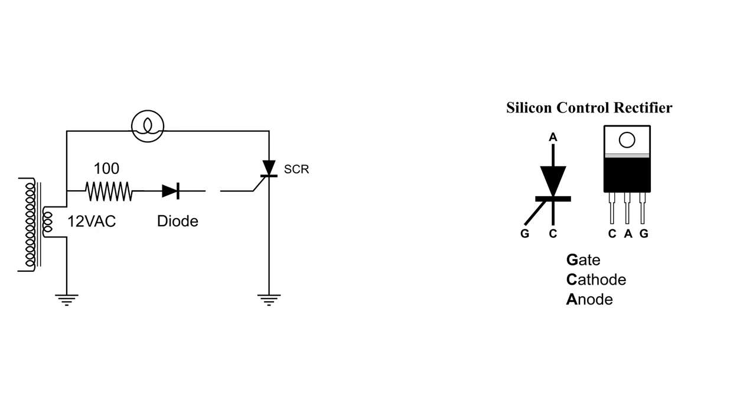And the SCR is connected to ground and one side of the light bulb, and the other side of the bulb to one side of the 12 volt AC.